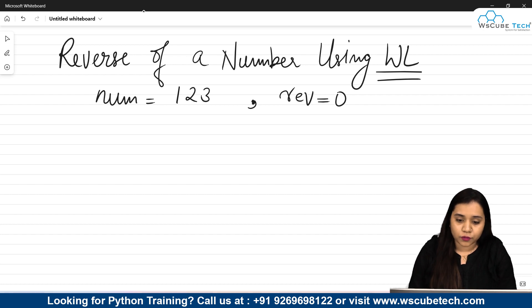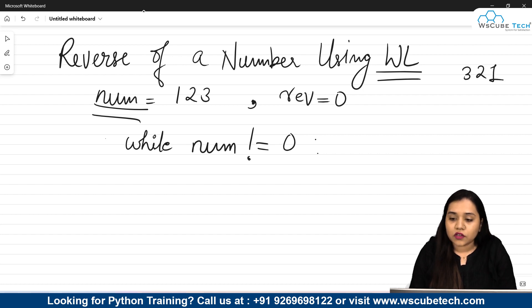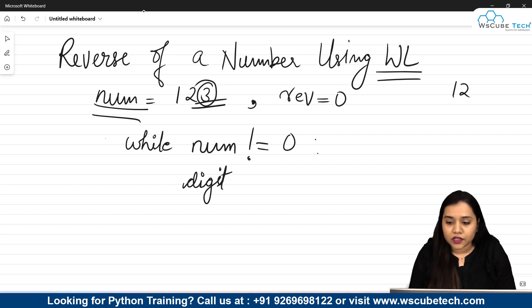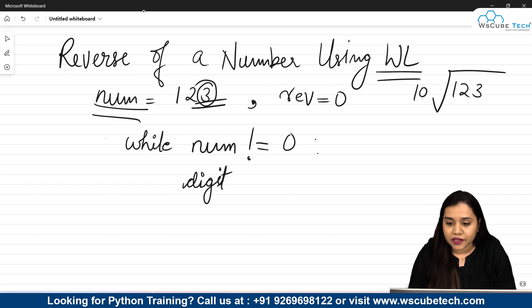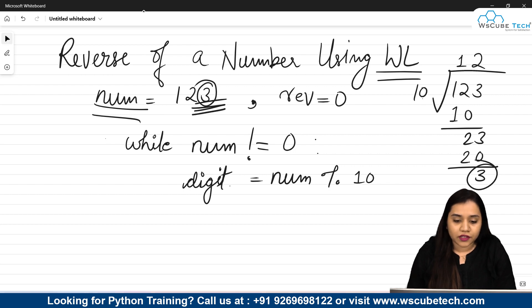Inside the reverse variable we will obtain the reverse, which would be 321. We give the condition: while this number is not equal to zero. To obtain 3 from 123, we use the modulus function. We create a variable called digit: digit equals number modulus 10. Dividing 123 by 10 gives a remainder of 3, so digit will hold the last digit of the number.